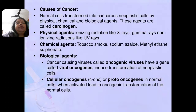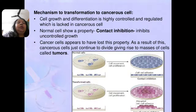Oncogenic viruses carry a gene called viral oncogenes, which induce the transformation of normal cells into neoplastic cells. Cellular oncogenes, or proto-oncogenes (c-onc), are present in normal cells; when activated, they lead to oncogenic transformation. The mechanism involves loss of regulation: cell growth and differentiation are highly controlled in normal cells. Normal cells show a property called contact inhibition, which inhibits uncontrolled growth. Cancerous cells appear to have lost this property, and as a result they continue to divide uncontrollably.